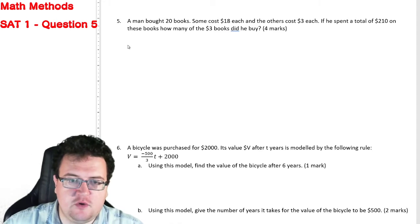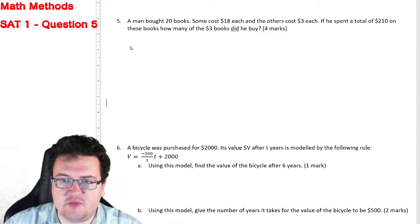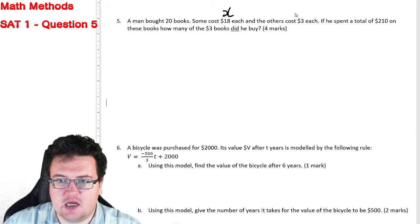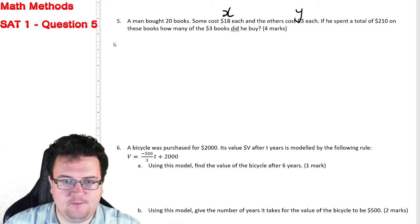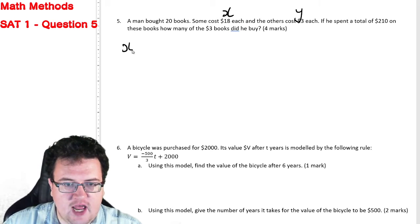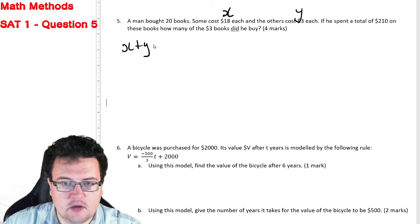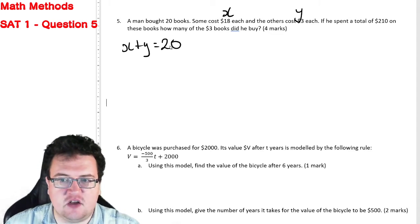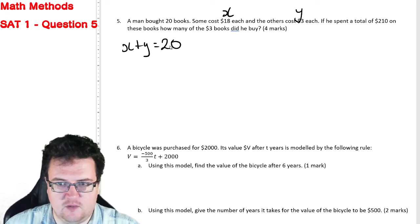So what we're going to do is assign some variables to the $18 books and the $3 books. We'll call the $18 books X and the $3 books Y. So I know that X plus Y equals 20 because he bought 20 books. He bought some amount of the $18 ones, he bought some amount of the $3 ones.